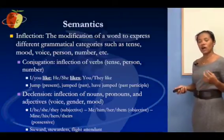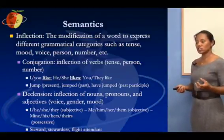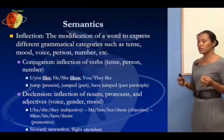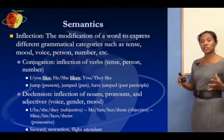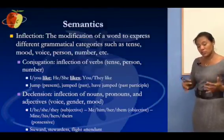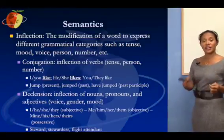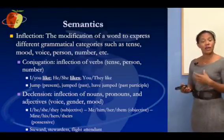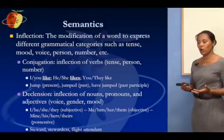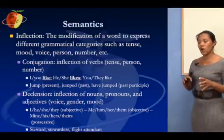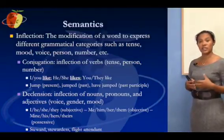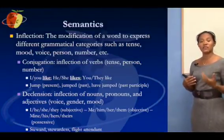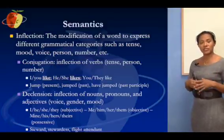Declension also implies voice, gender, and mood. It involves the inflections of nouns, pronouns, as well as adjectives. 'I,' 'he,' 'she,' 'they' are subjective, meaning they serve as the subject of a sentence — you would say 'I like something,' not 'me like something.' 'Me,' 'you,' 'him,' 'her,' 'them' are the objective, receptive part of the sentence — for example, 'she gave something to me, I received it.'